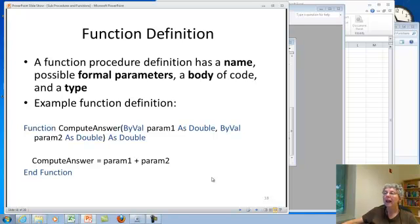A function definition has a name, well, it starts with a keyword function, first of all. Then, there's the name, which again, we should use a verb. I'm calling this compute answer. And, I'm keeping these examples really simple, so we don't get distracted by what it actually does. I have two formal parameters here, param1 and param2. And, finally, I have the type that the function returns, the same as with a user function in Excel. Then, I have the code. And, I return the answer by assigning a value to the name of the function. And, then it finishes with the keywords end function.